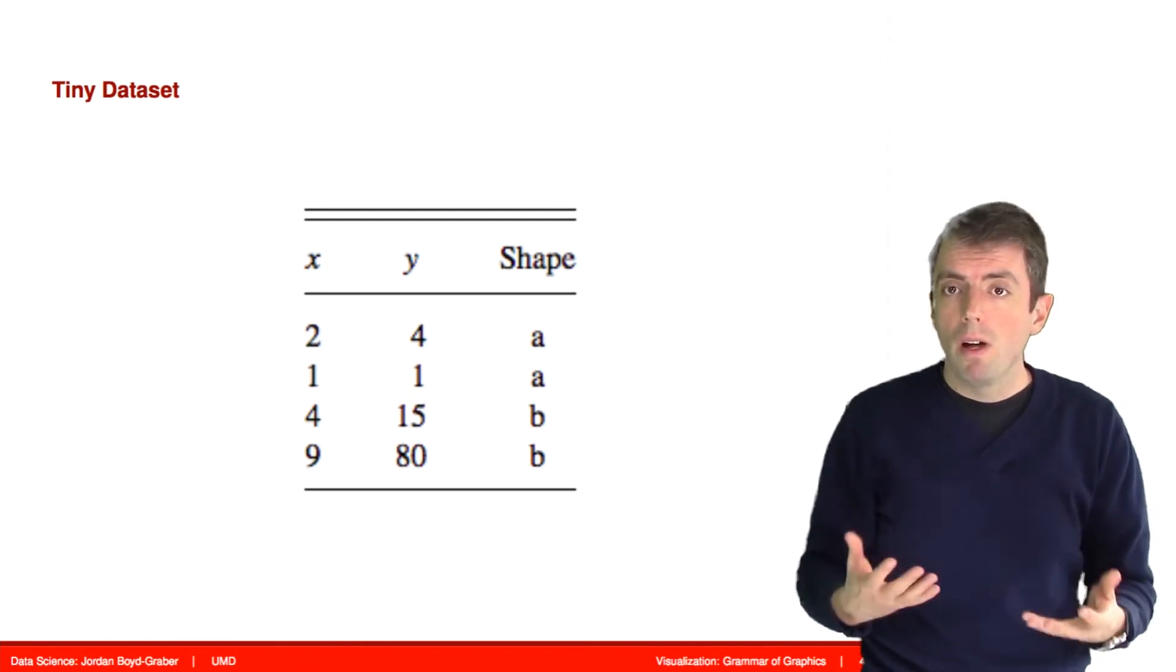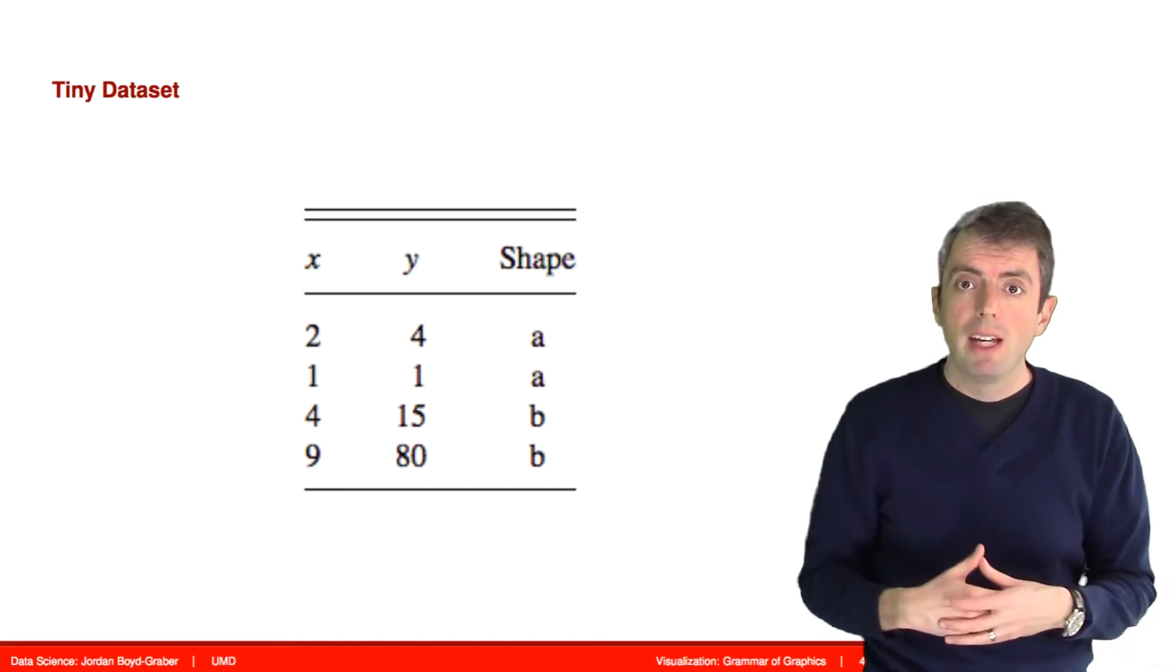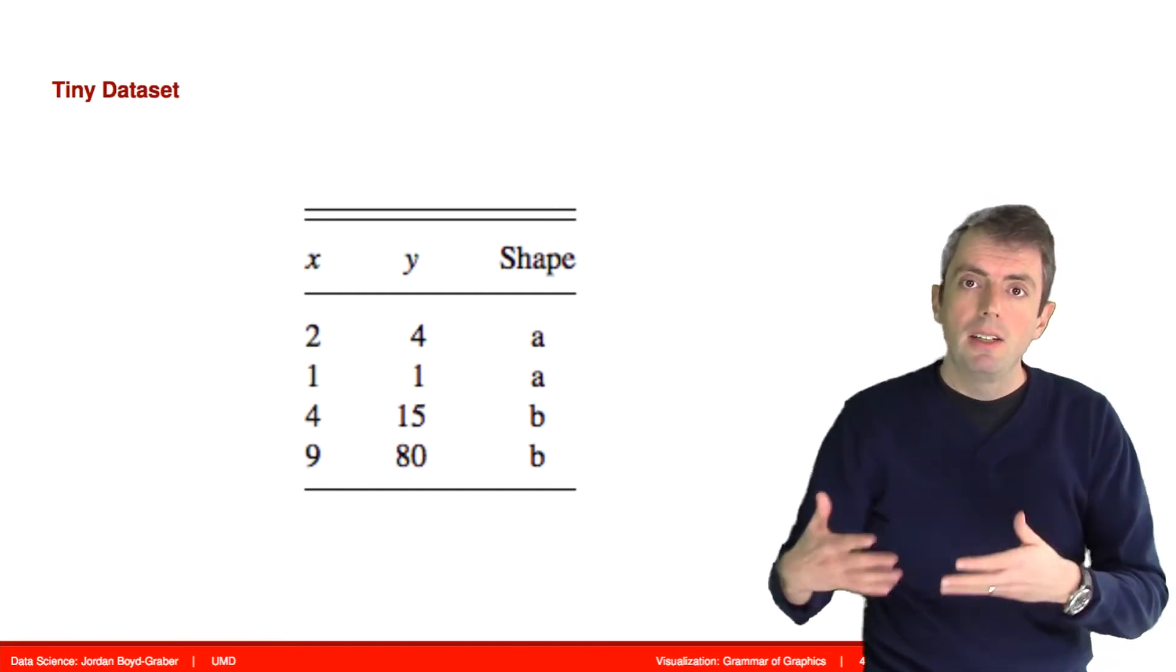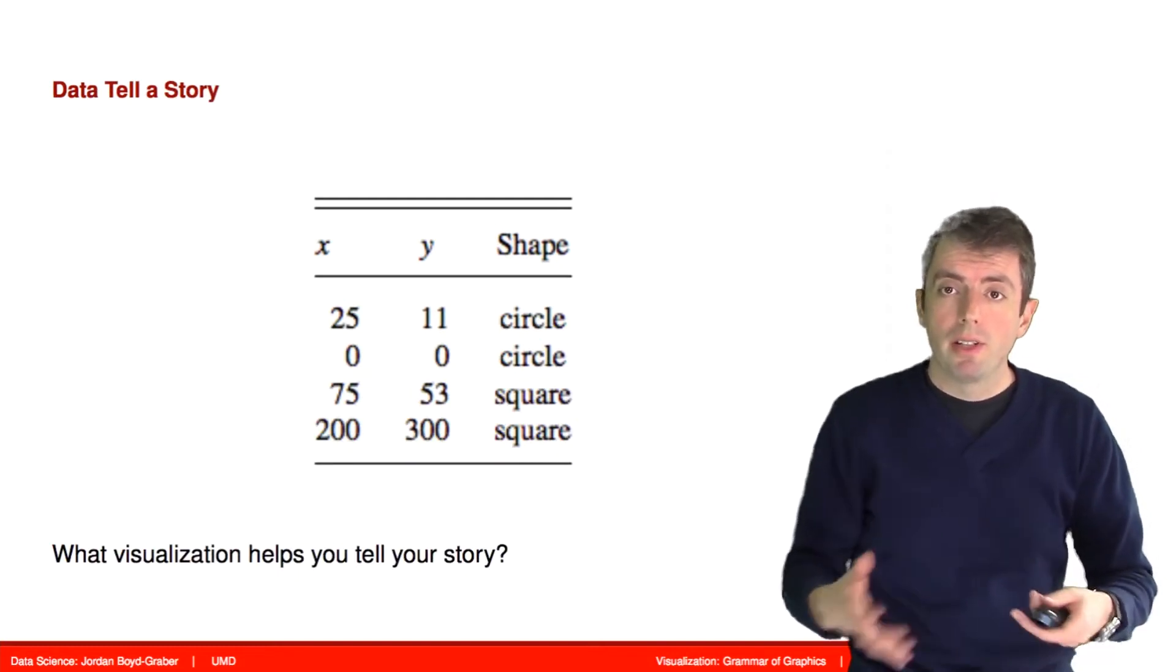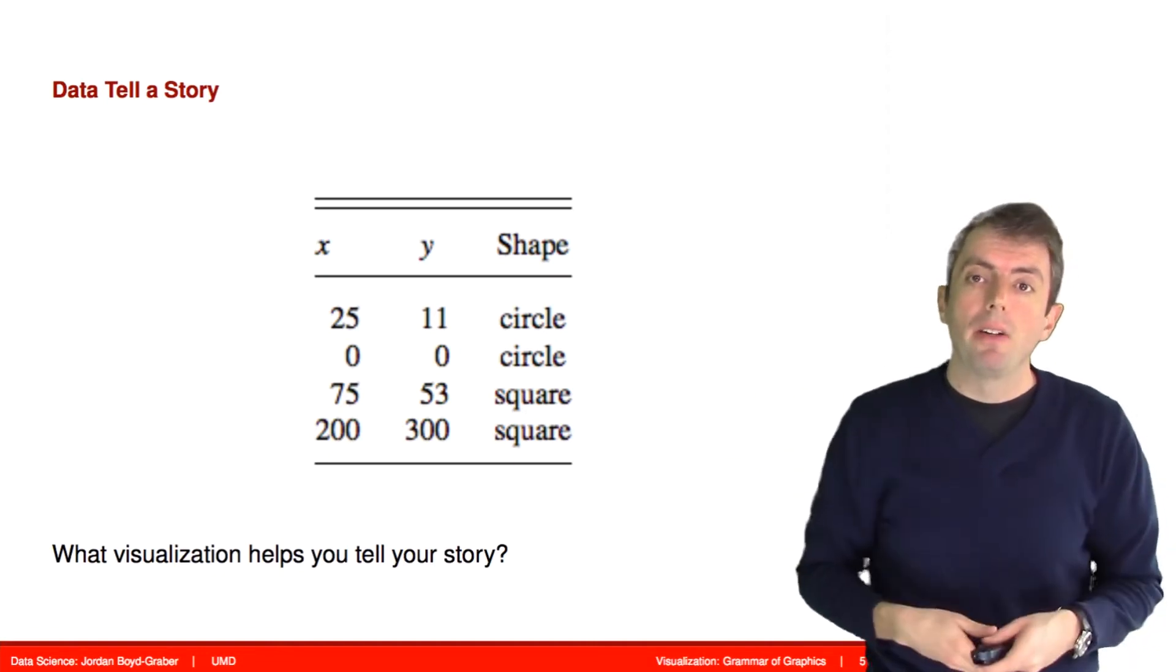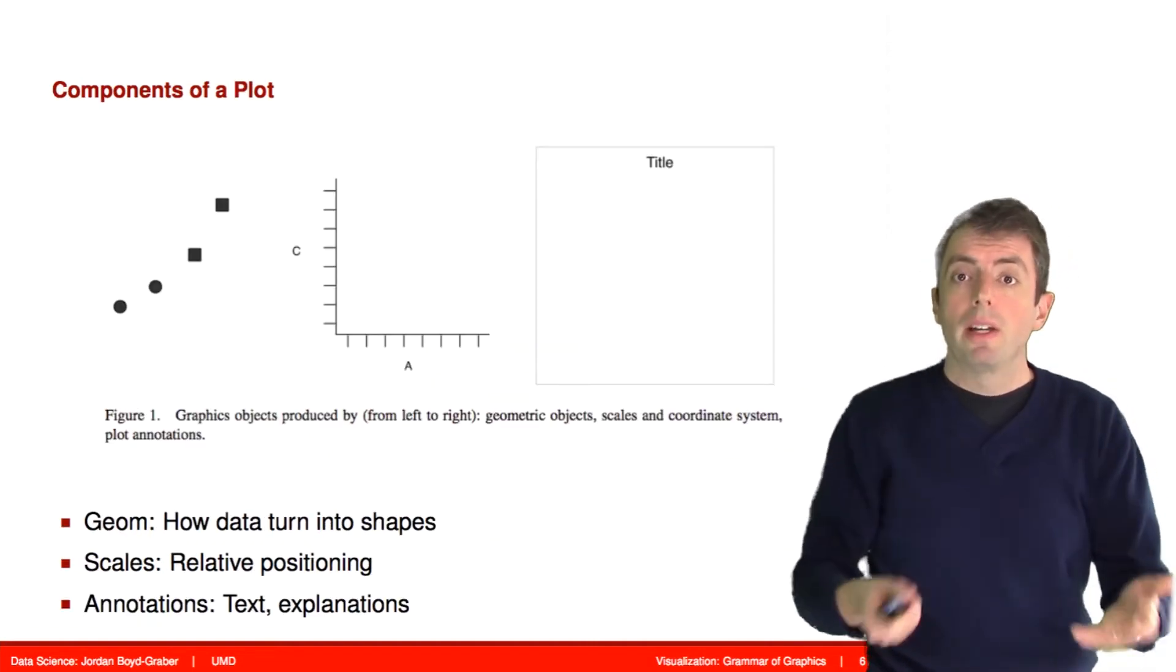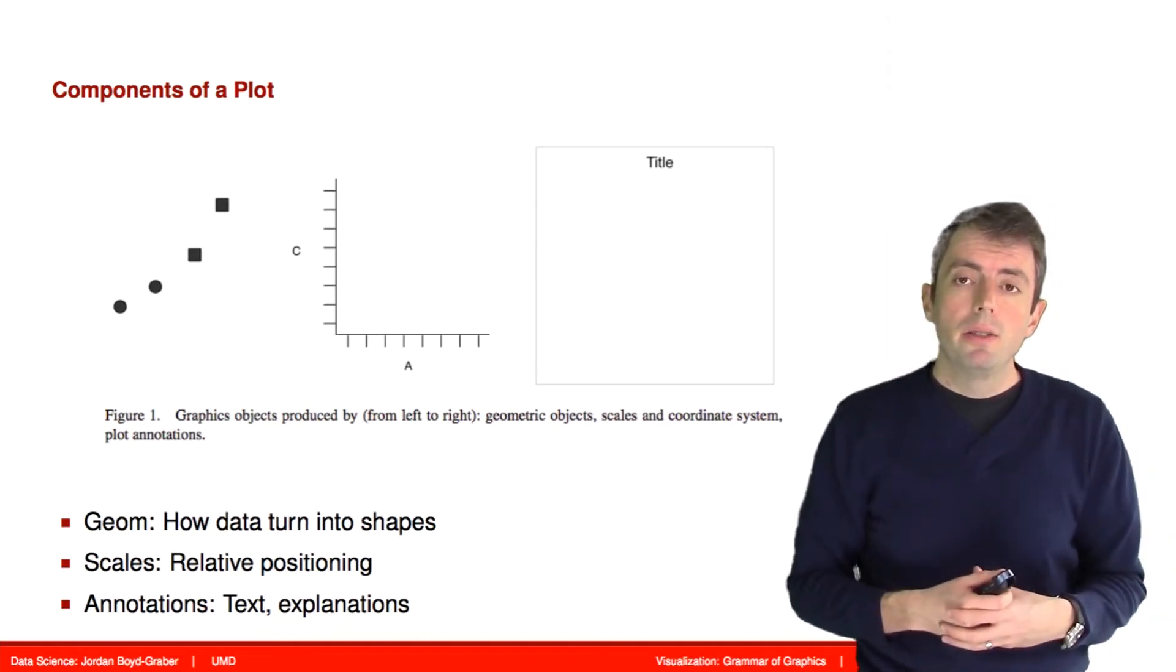One thing that the Grammar of Graphics allows us to do is to transform components of our data into things that make sense for a visualization. For example, we may want to turn the a's and b's into different shapes and we'll display them somehow in a graphic.